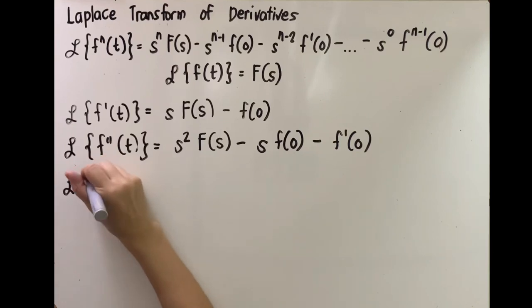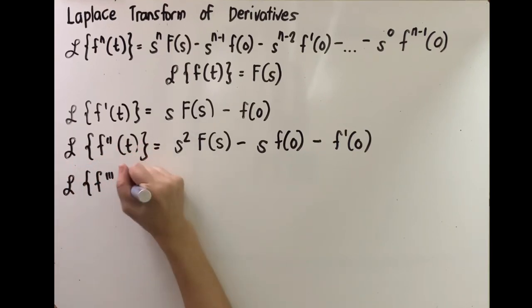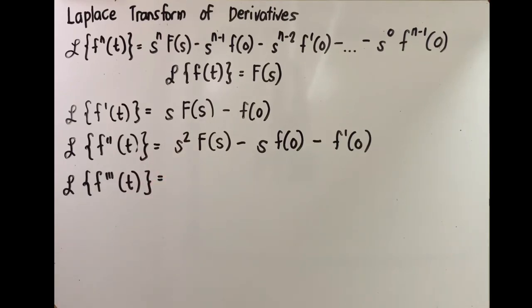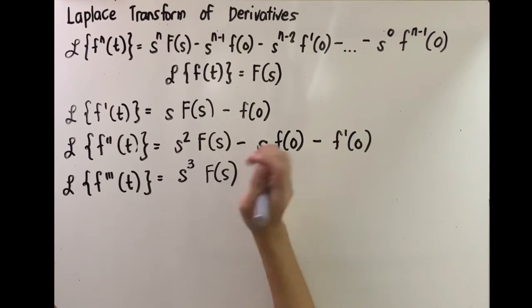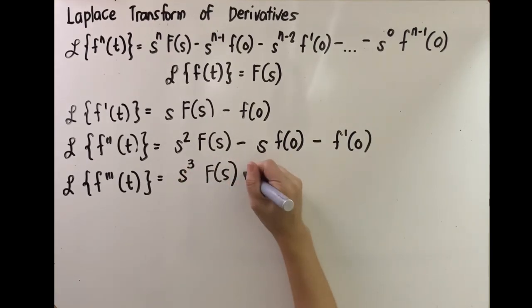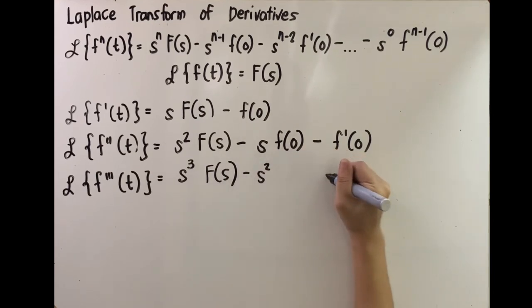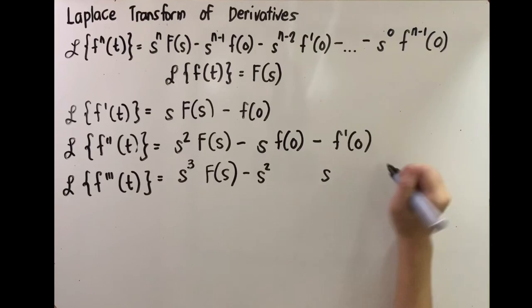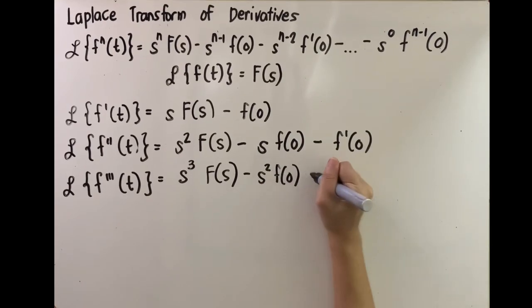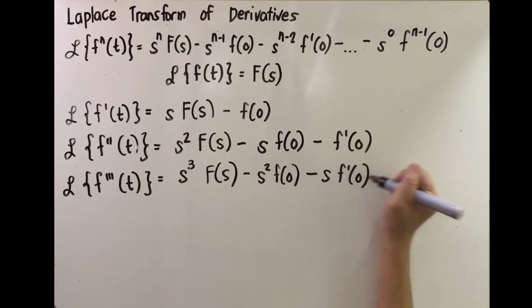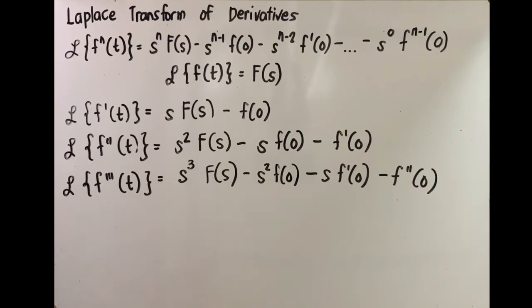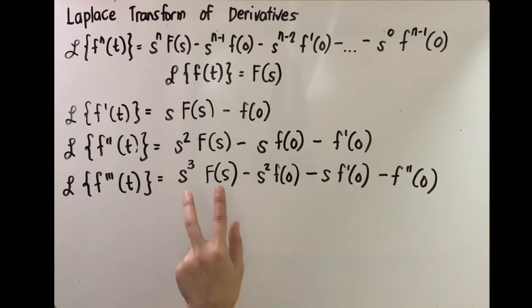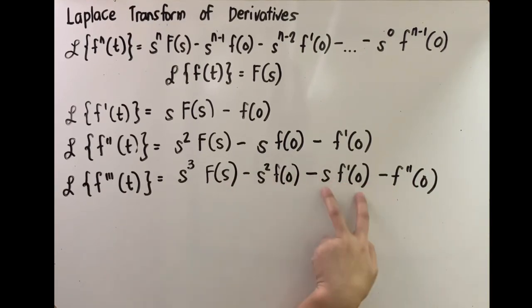Let's try the Laplace transform of the third derivative, f triple prime of t. We start with s raised to 3, then multiply it by F of s. Subtracting 1 from the exponent gives s squared, then s, then 1. So s squared is multiplied by f of 0, s is multiplied by f prime of 0, and the last term is 1 times f double prime of 0. The sequence for s is: s cubed, s squared, s, s raised to 0; and for the functions: F of s, f of 0, f prime of 0, f double prime of 0.